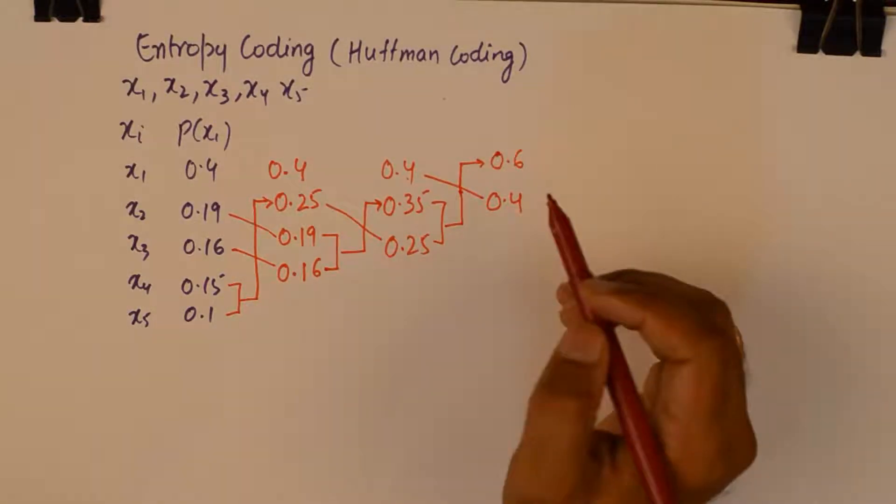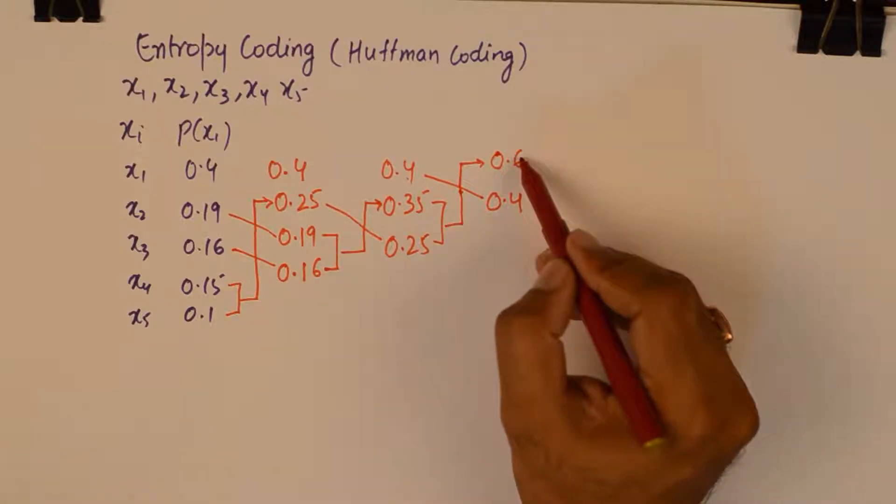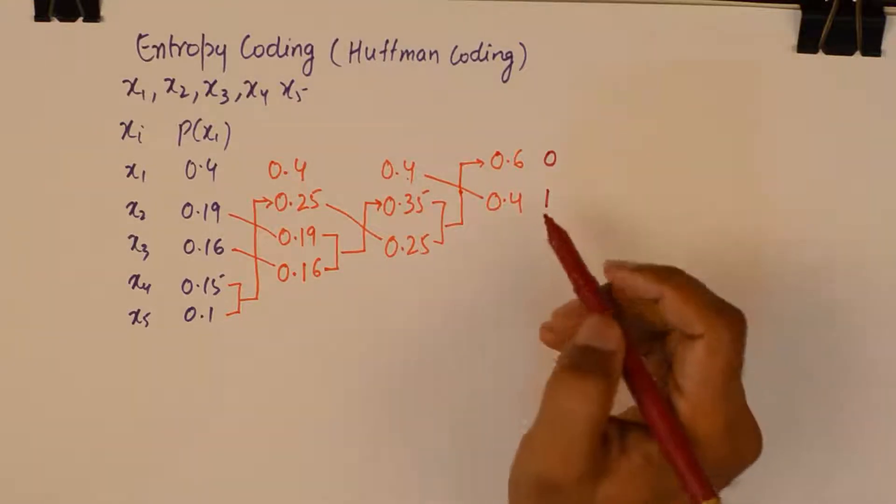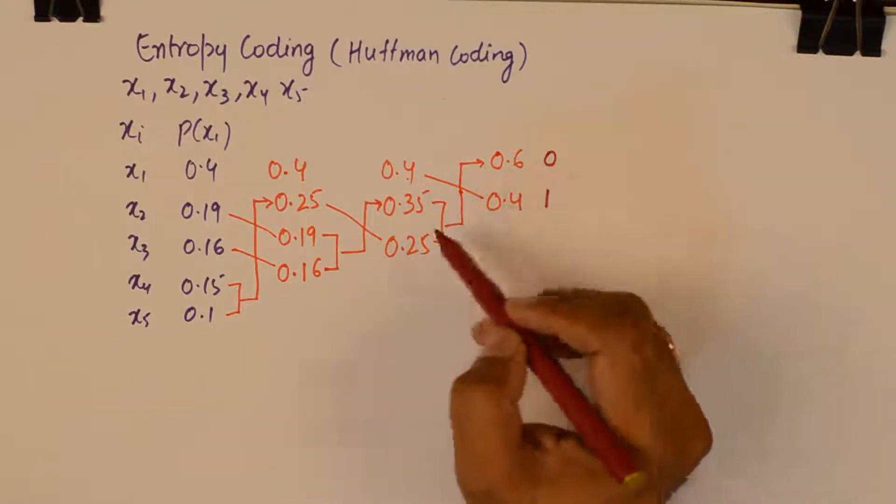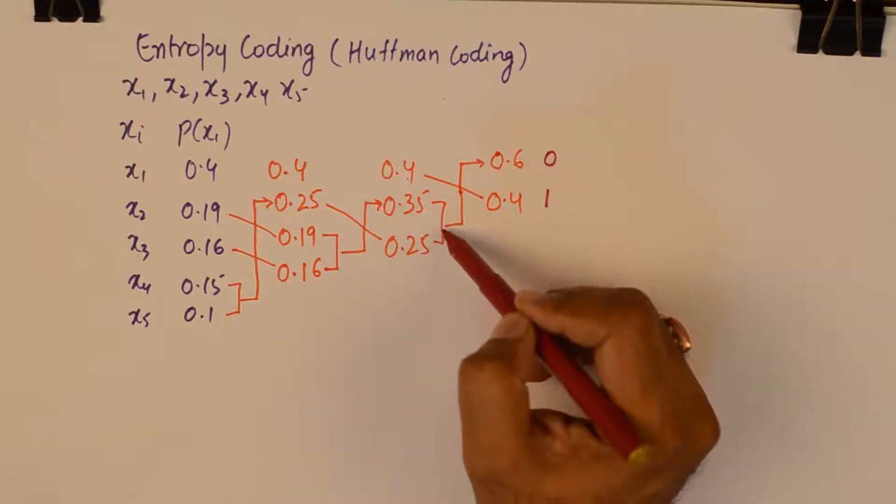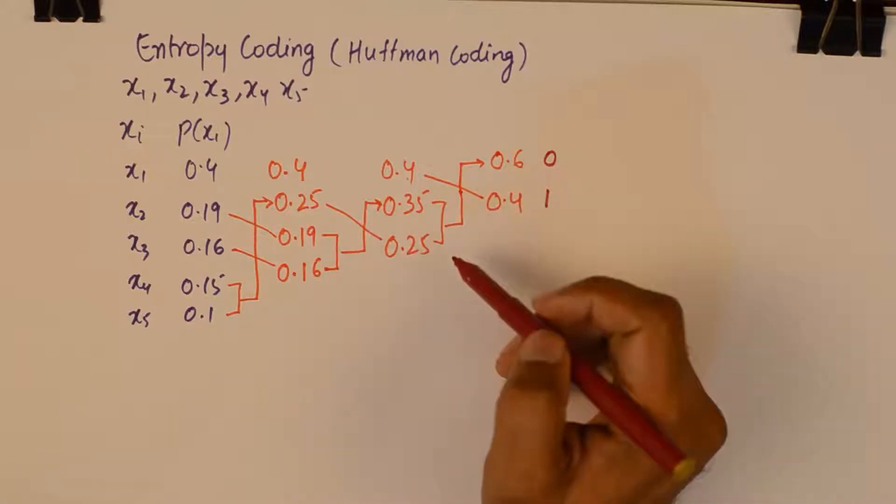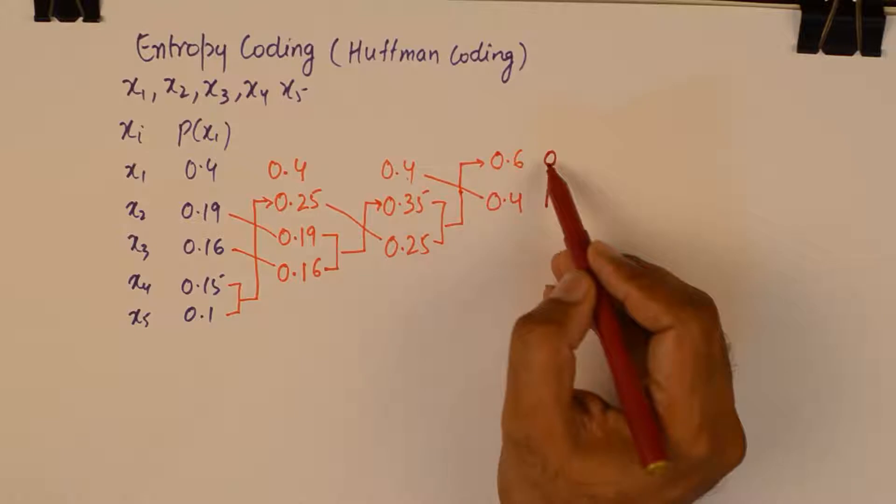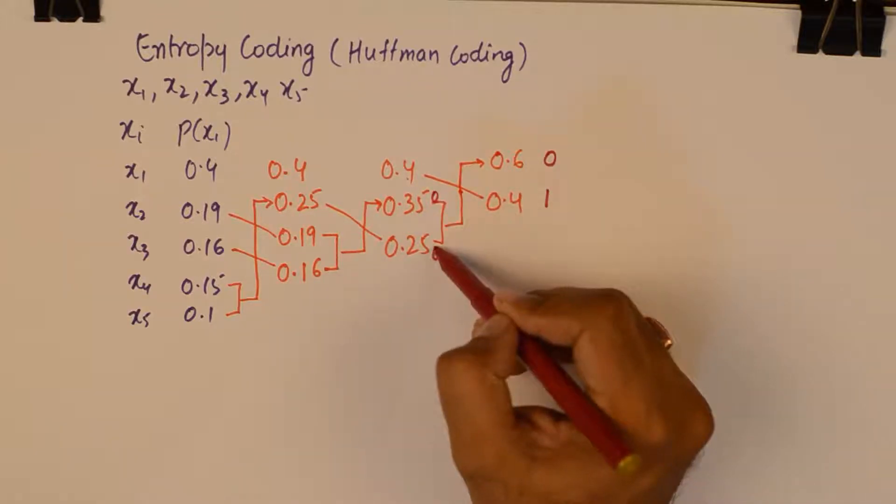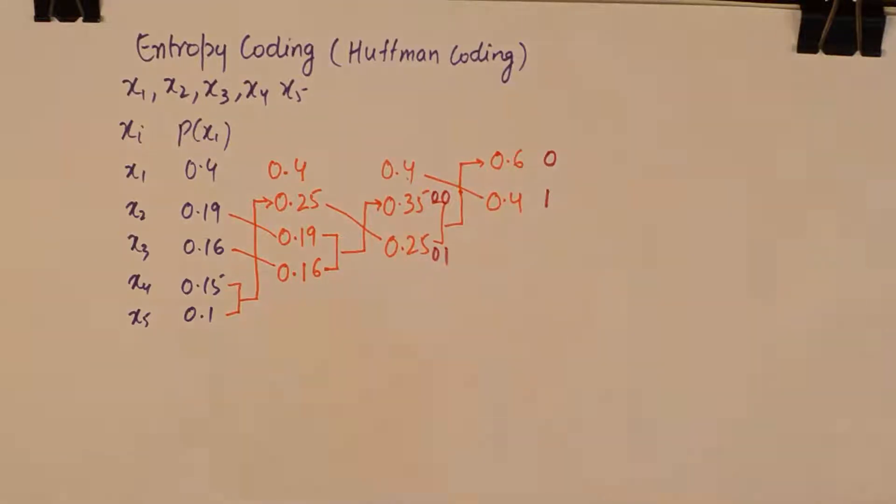Now we need to start generating the code from this side. The topmost gets a 0 and this one gets a 1. And now these two probabilities you can think of this 0.6 as the parent of these two. So this parent has gotten a 0 here. So place a 0 first which is the parent's 0. Then the upper one gets a 0 and the lower one gets a 1.